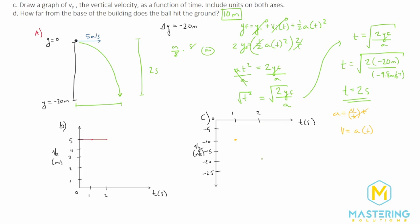At half a second, the velocity is half of negative 9.8, which is negative 4.9 m/s. The graph for part C — the y component of velocity — is a straight diagonal line. The slope of the line gives the acceleration, and since gravity is constant, it makes sense the line is straight. So here are all the answers: the trajectory for part A, the two velocity graphs for parts B and C, and the horizontal distance from the base of the building for part D is 10 meters.